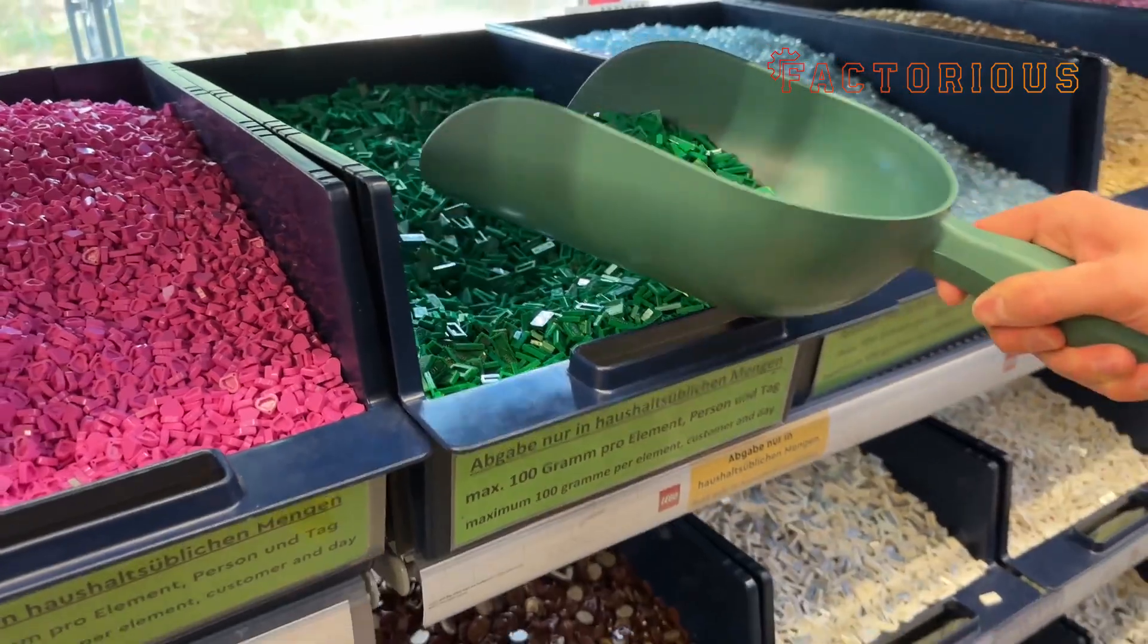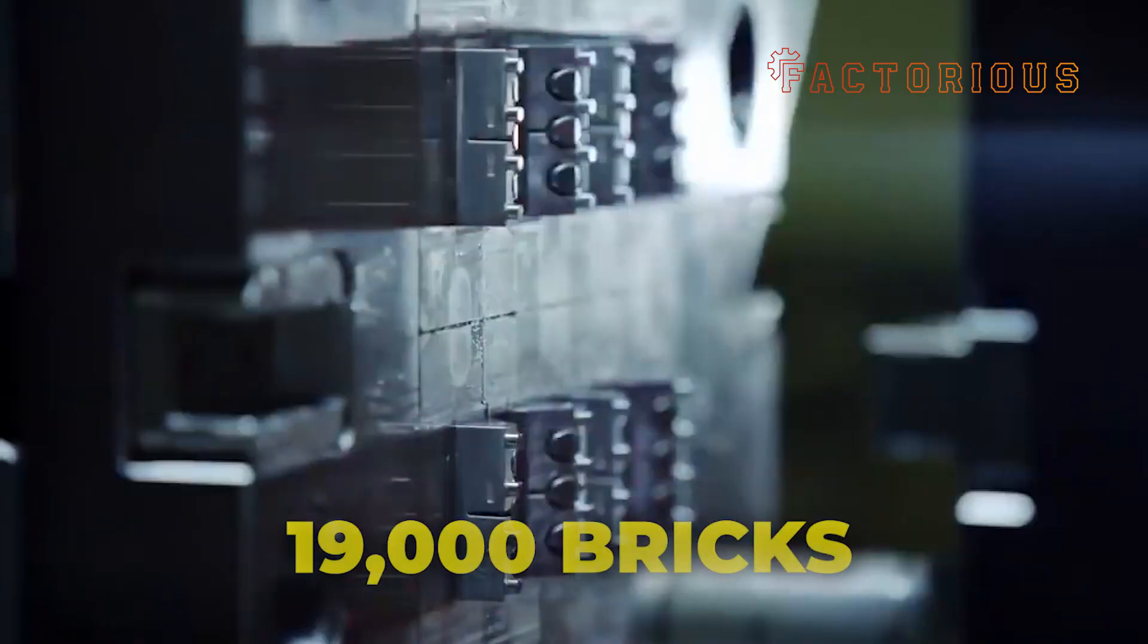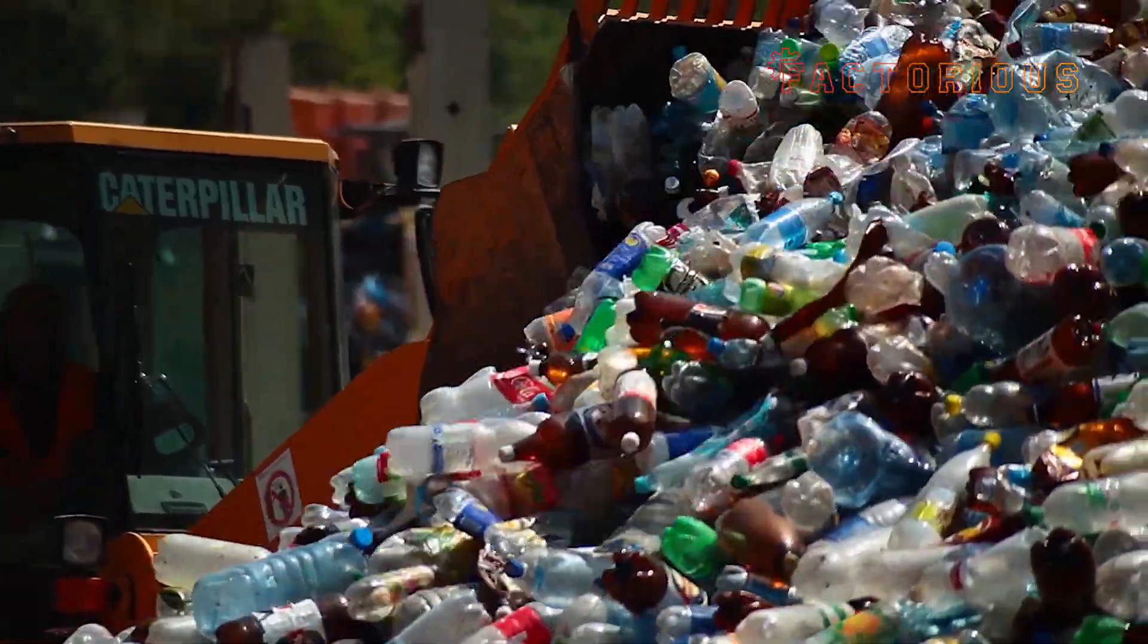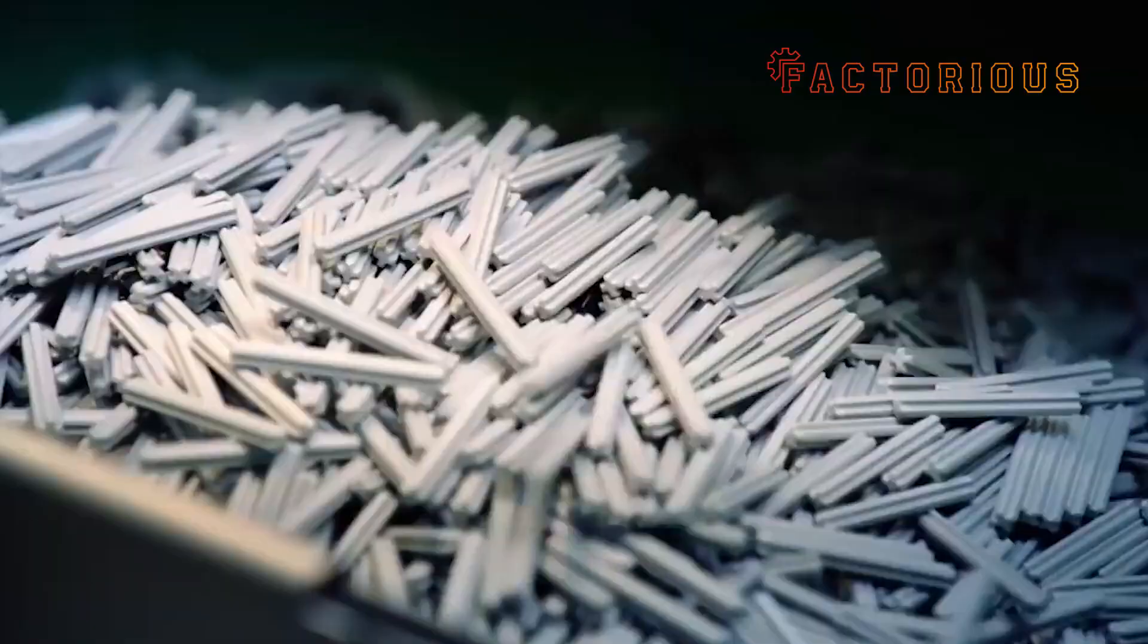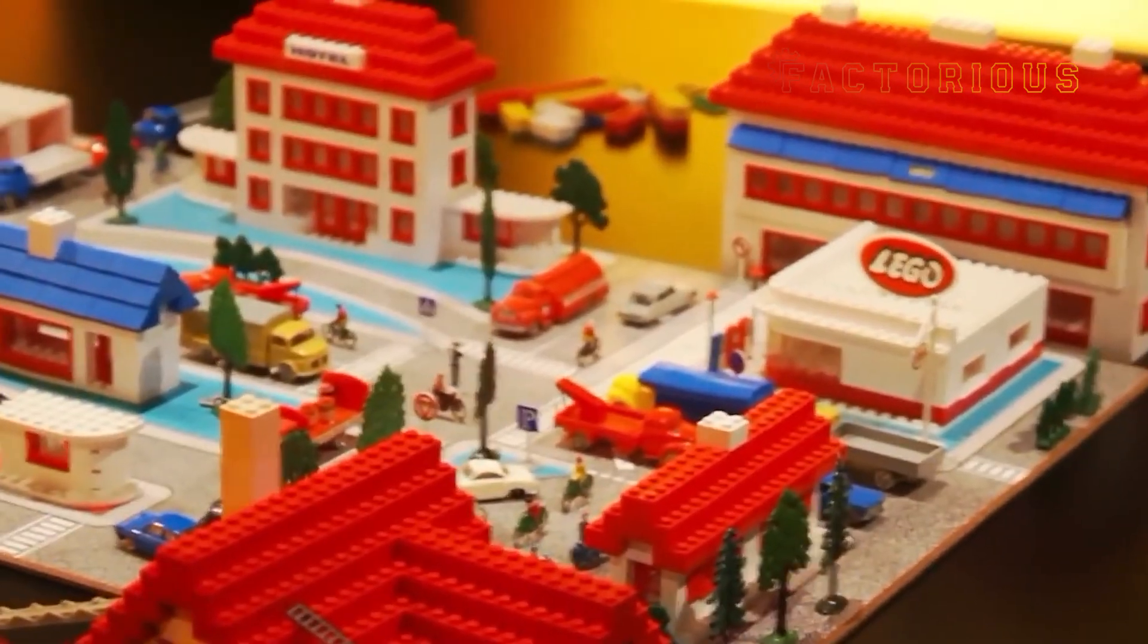Want to know something interesting? Lego produces over 60 billion pieces per year. That's roughly 19,000 bricks every second. But with that much plastic in play, you might be wondering, how do they make sure every single one meets the same perfect standard? That's where Lego's obsession with quality comes in.